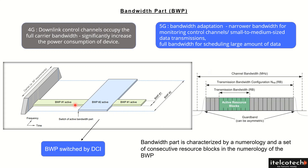This has to be defined initially by the network and is characterized by the given numerology. There are different subcarrier spacings or numerologies, and depending upon that, this particular bandwidth part will be defined.